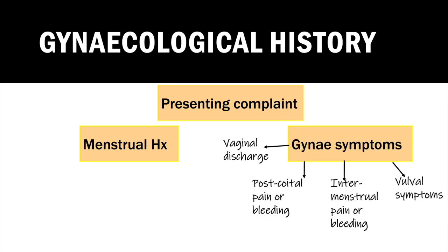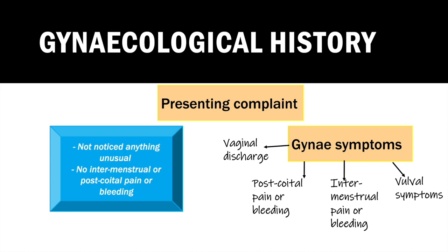You then move on to ask about other gynae symptoms, starting openly before inquiring specifically about any change in the quantity, smell, or appearance of vaginal discharge, or whether Amy has experienced any vulval itching or discomfort. You also ask whether she's had any bleeding or pain between her periods or after sex. Amy denies noticing anything unusual and hasn't had any pain or bleeding outside of her periods.